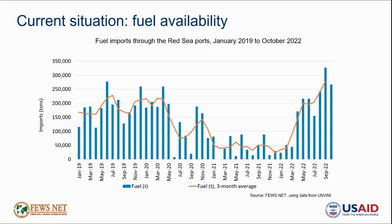An additional positive development during the truce period has been the increase in fuel availability in SBA-controlled areas given eased restrictions for the entry of oil ships. This chart shows monthly fuel import levels through Yemen's Western Red Sea ports from January 2019 to October 2022. Following the eased restrictions, fuel import levels increased significantly, fortunately ending the severe fuel shortages that had been ongoing in SBA-controlled areas since early 2020, which had been negatively impacting livelihoods dependent on fuel such as in agriculture or transportation sectors, as well as putting upward pressure on food prices and generally reducing purchasing power for millions of people.